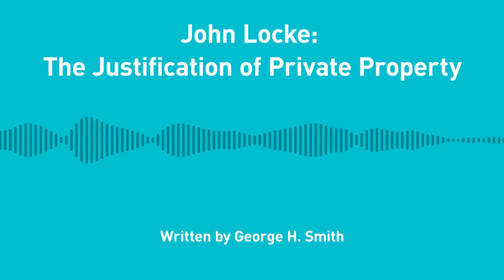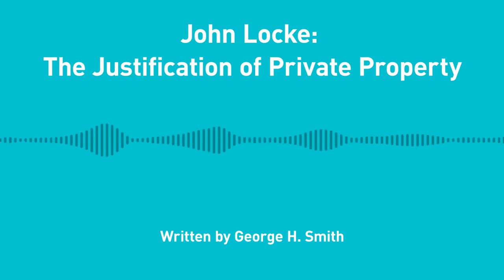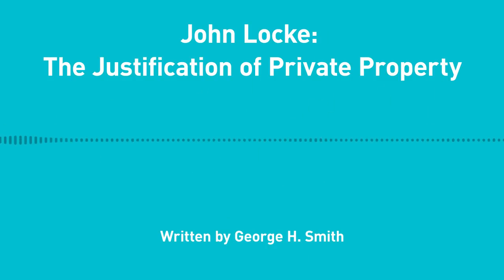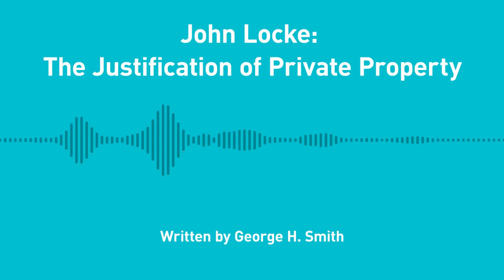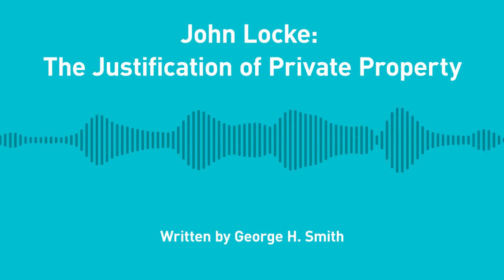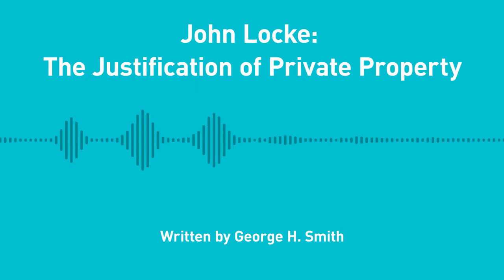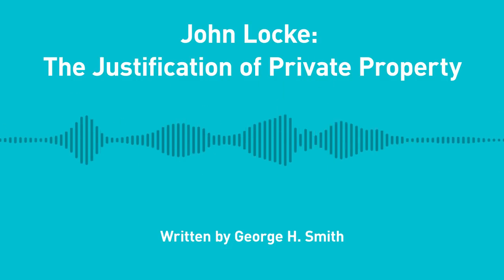The most important source for understanding Locke's justification of private property is the celebrated chapter on Property, which comprises Chapter 5 of the Second Treatise of Government. But we also find significant remarks about property in Chapter 4 of the First Treatise. Although most of my discussion is based on Locke's treatment in the Second Treatise, I may occasionally draw upon his comments in the First Treatise.